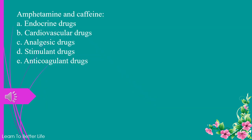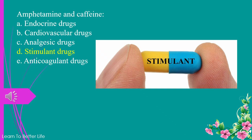Question 1. Amphetamine and caffeine. a. endocrine drugs, b. cardiovascular drugs, c. analgesic drugs, d. stimulant drugs, e. anticoagulant drugs. The answer is d. stimulant drugs.